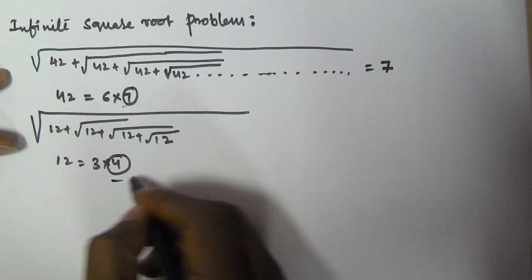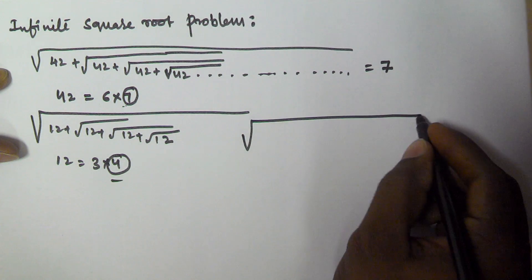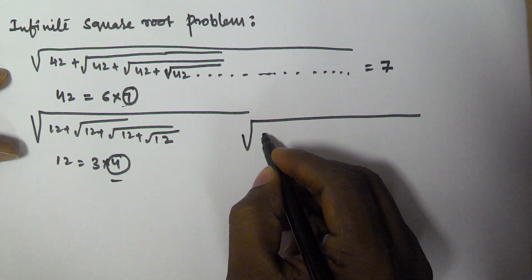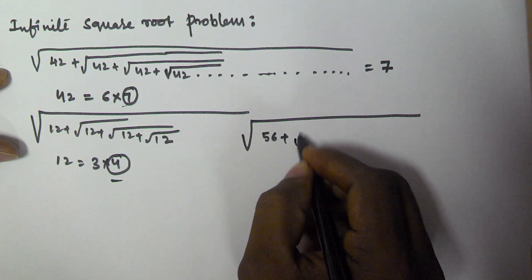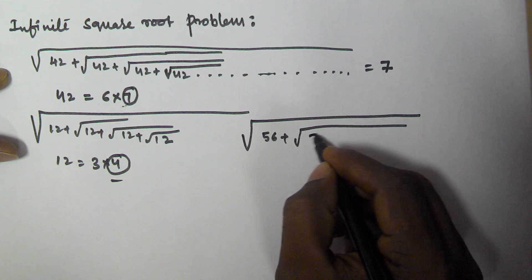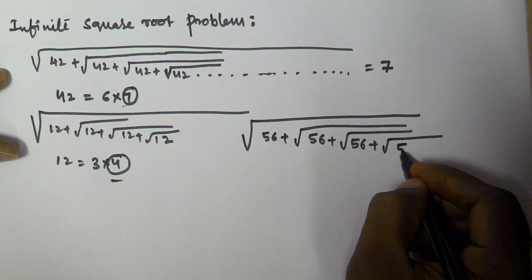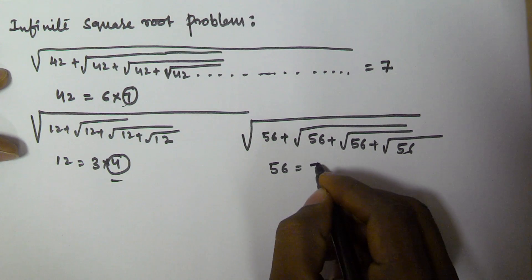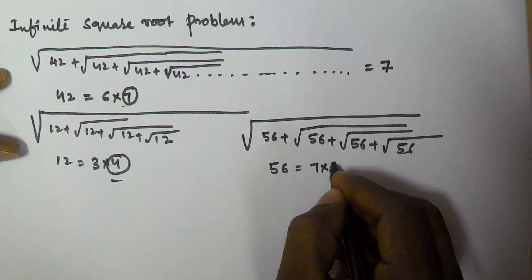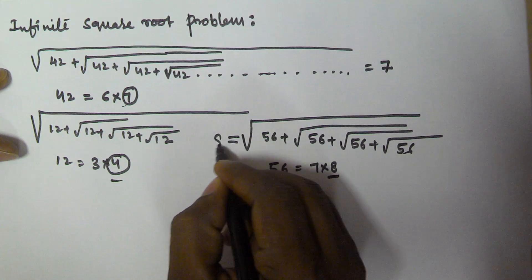For another example: under root of 56 plus under root of 56 plus under root of 56 and so on. The number 56 can be written as 7 times 8, so the answer for this infinite square root problem is 8.